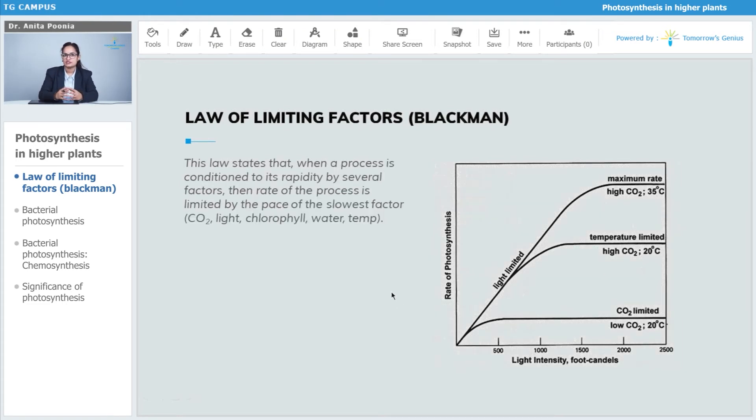This law basically states that when a process is conditioned to its rapidity by several factors, then the rate of photosynthesis is limited by the pace of the slowest factor. Could be carbon dioxide, light, chlorophyll, water, or temperature.